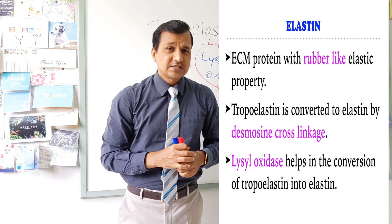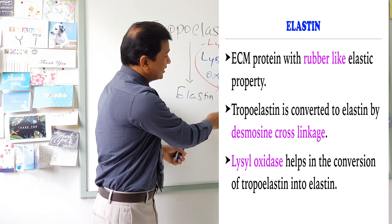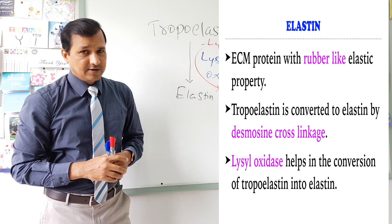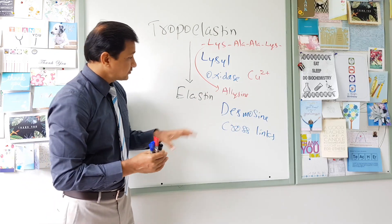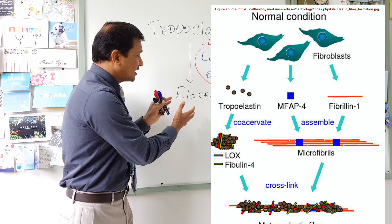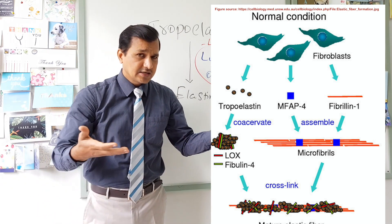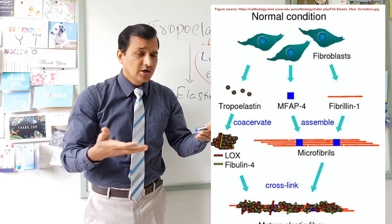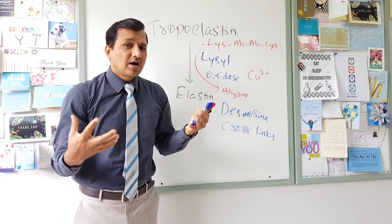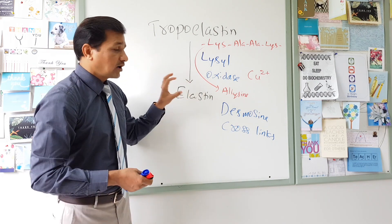That is why elastin has a rubbery elastic network. The elastic property of elastin is due to desmosine crosslinks mediated by lysyl oxidase. Once you get elastin, it is laid down onto a fibrillin molecule — fibrillin acts as a scaffold over which elastin is deposited. This means you need a normal fibrillin molecule for elastin to have its function.